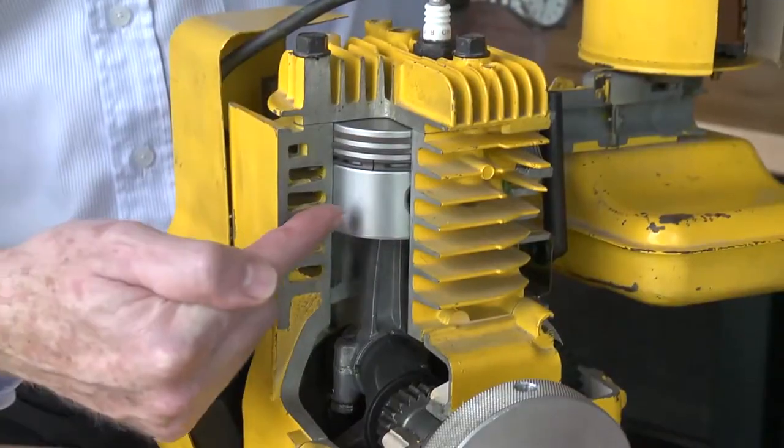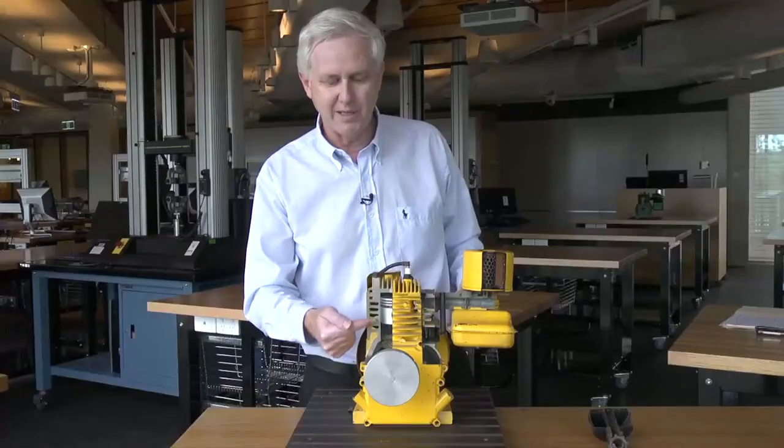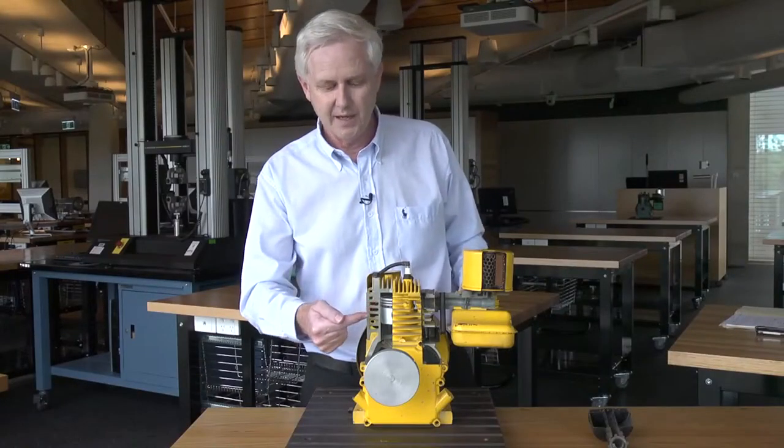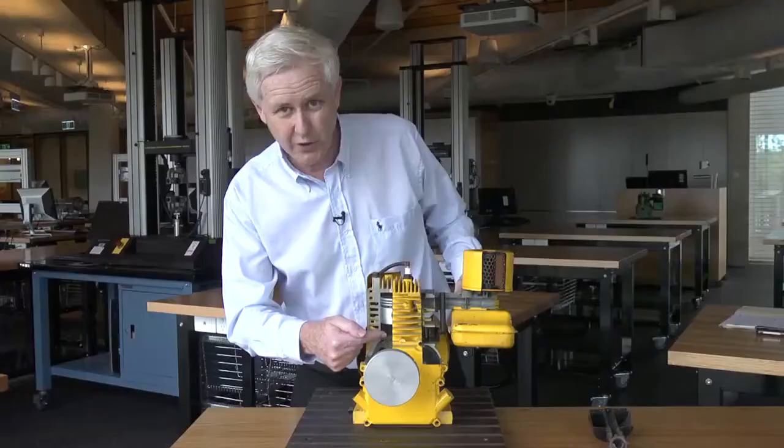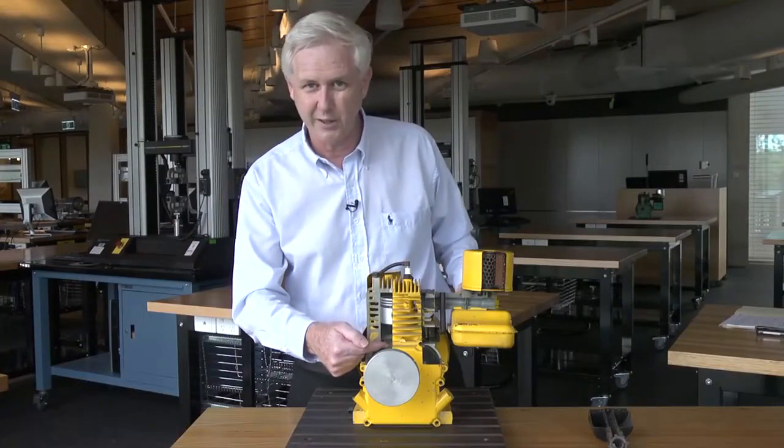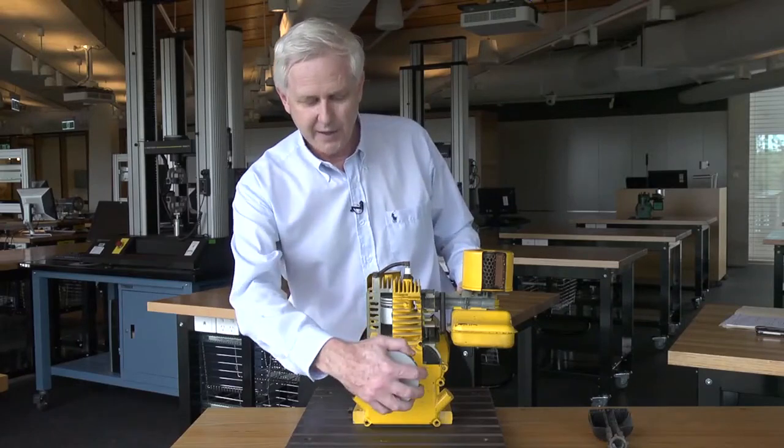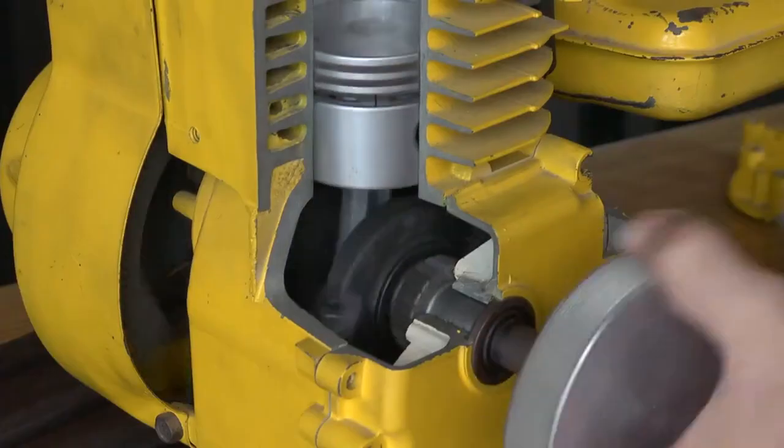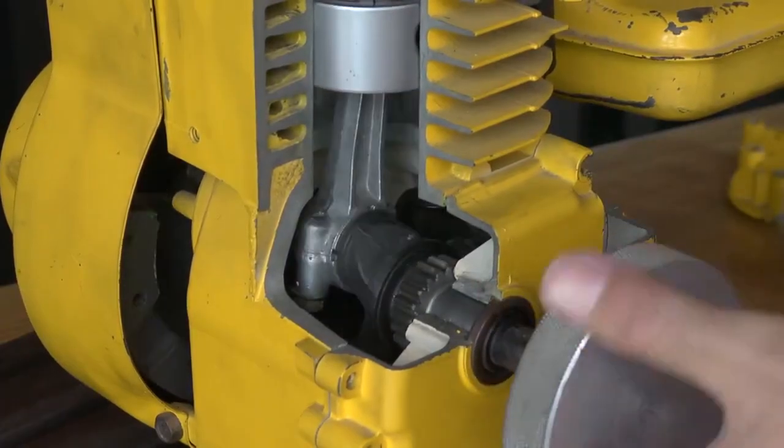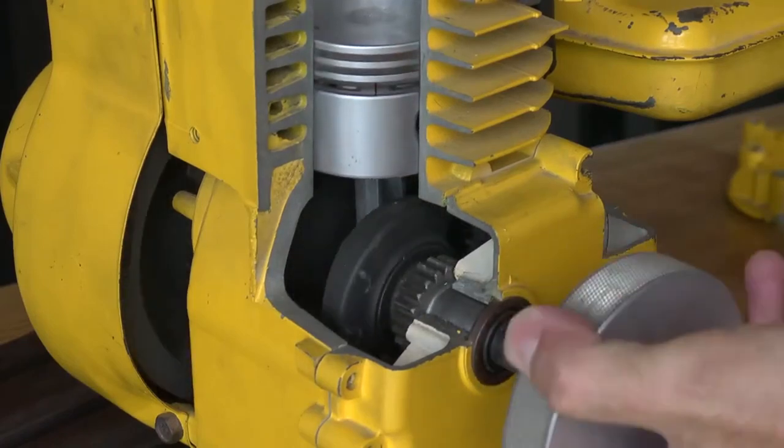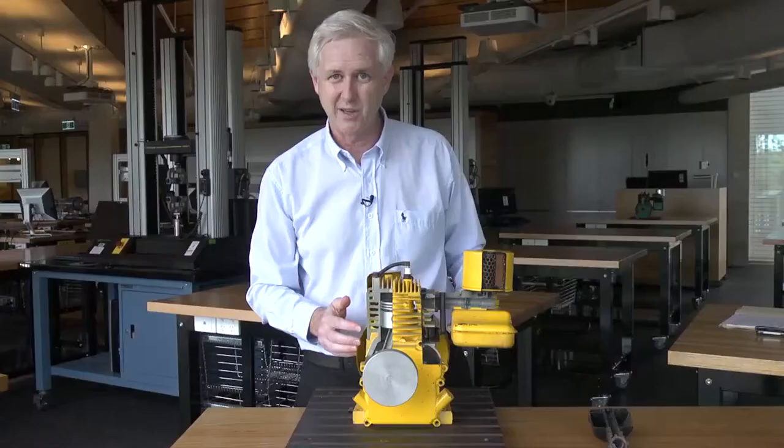We have a piston which travels up and down inside a cylinder. The piston is connected to a crankshaft via a connecting rod. The crankshaft is connected to this arm that allows me to rotate it, so we can see what happens as the piston travels up and down inside the engine.